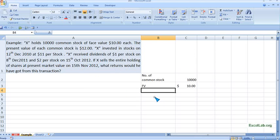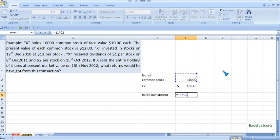These are the common stock, 10,000 units, and the face value is $10 per stock. We can begin. Initial investment: it is $11 per stock multiplied by the number of stock, which is 10,000. So we got it, it's $110,000.